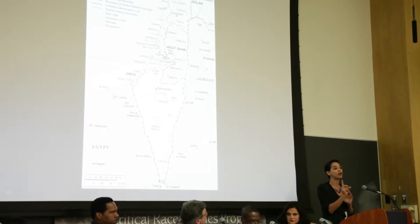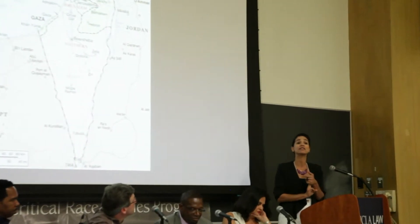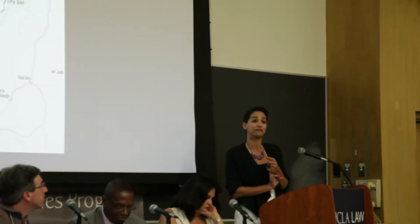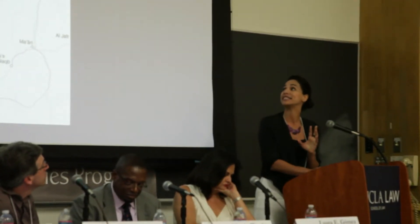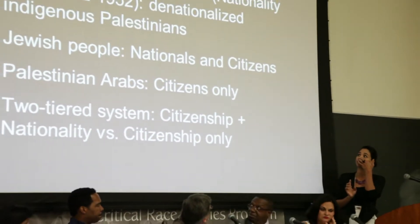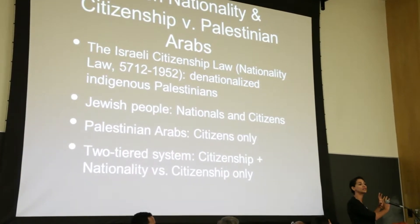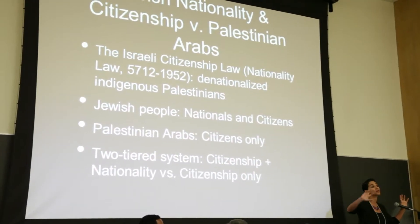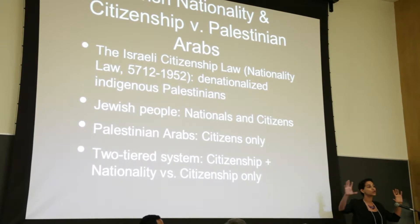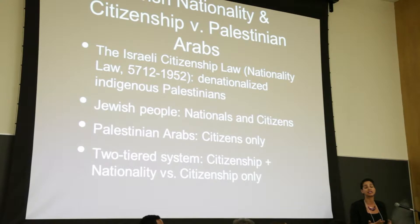These are the Citizenship Law of 1952, the Law of Return of 1950, and the Absentee's Property Law of 1950. Without going into great detail, the Citizenship Law created a two-tiered system of Jewish nationals who were entitled to a certain set of rights distinct from Israeli citizens, creating a bifurcation between the Jewish-Israeli and the citizen-only. There is no such thing as Israeli nationality.